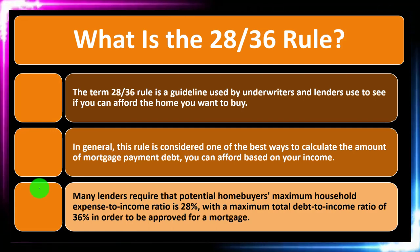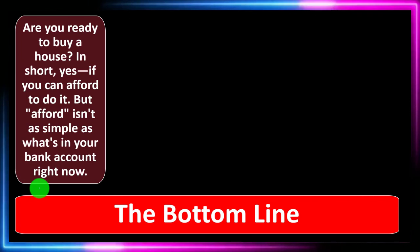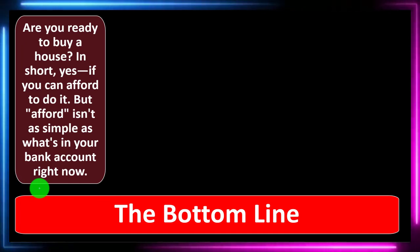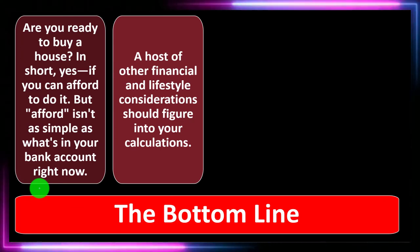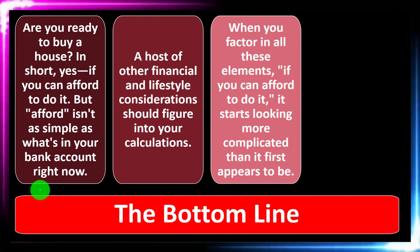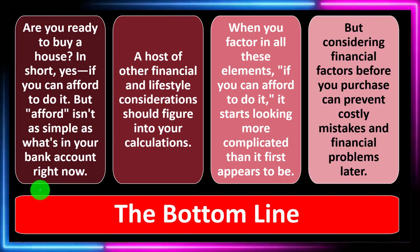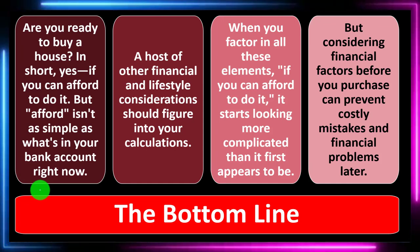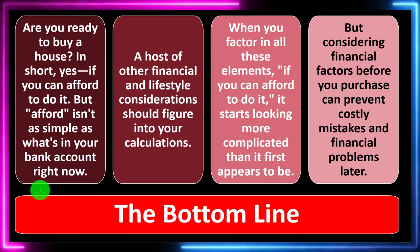The 28/36 rule is a guideline used by underwriters and lenders to see if you can afford the home you want to buy. Many lenders require that a potential home buyer's maximum household expense-to-income ratio is 28%, with a maximum total debt-to-income ratio of 36%, in order to be approved for a mortgage. The bottom line: are you ready to buy a home? In short, yes — if you can afford to do it. But 'afford' isn't as simple as what's in your bank account right now. A host of financial and lifestyle considerations should figure into your calculations. Considering all these financial factors before you purchase can prevent costly mistakes and financial problems later. It's a long-term purchase affecting multiple periods into the future — measure twice, cut once.